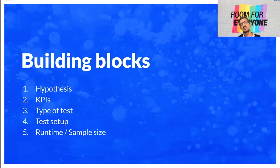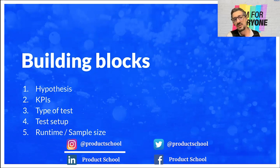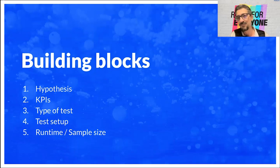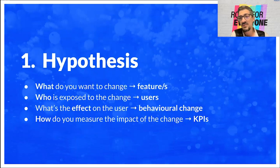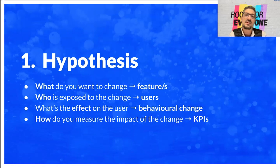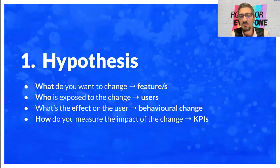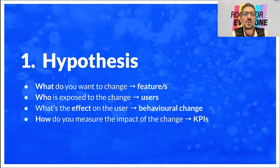Let me tell you what are the building blocks of A/B testing. There are at least five main building blocks: hypothesis, KPIs, type of test, setup, and runtime or sample size. Starting from the hypothesis — it is composed of four elements: what do you want to change (the features you are testing), who is exposed to the change (your users or user segment), what is the expected behavioral change, and how do you measure the impact — typically KPIs.